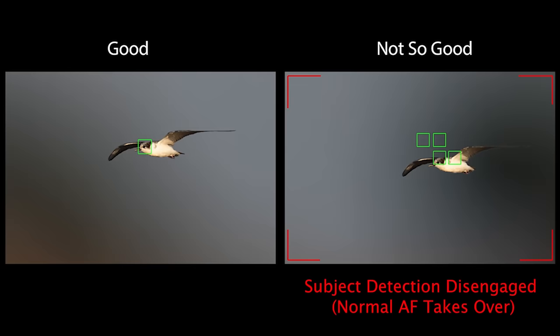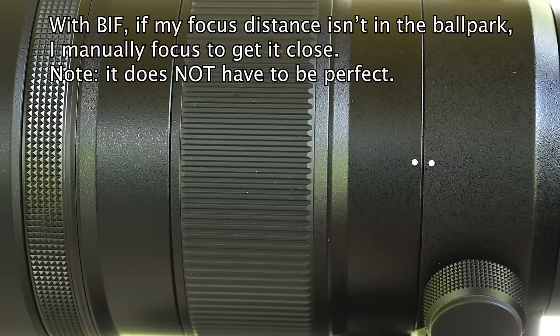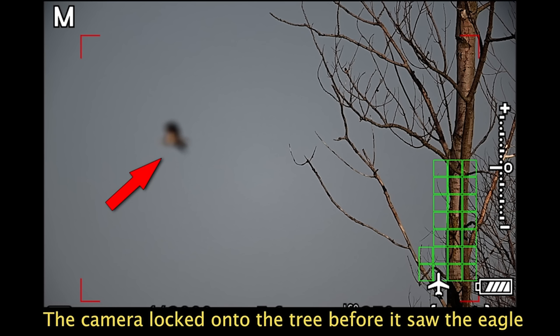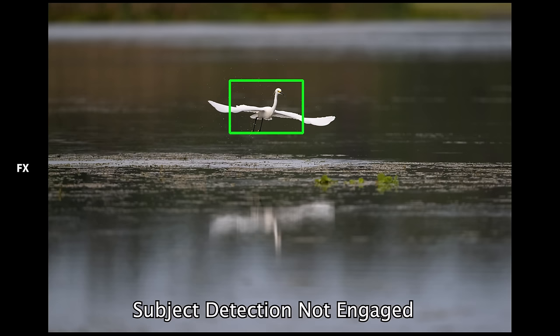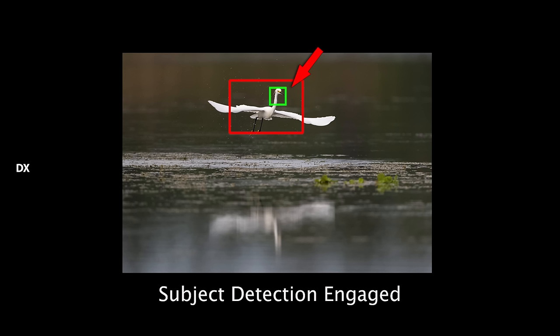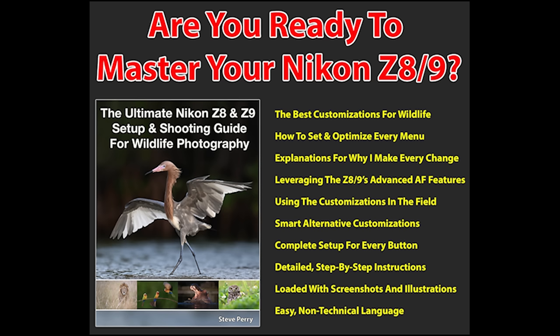The effectiveness of subject detection lies in large part with the panning skill of the photographer. The better you are at keeping the bird in position in the frame, the better subject detection will be at sticking to the face and eye area. Subject detection works best when it can actually see the bird — pre-focusing at about the same distance as the bird helps it lock on much faster. Also, for distant subjects I've noticed subject detection tends to work slightly better if you switch to DX crop mode, but only for distant subjects.